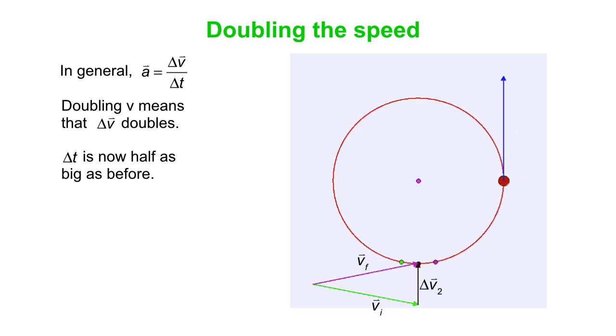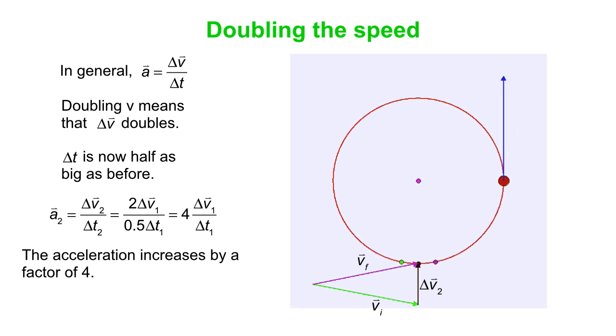And delta T is now half as big, because the object is going twice as fast, so to cover the same distance takes half the time. So the acceleration is now twice the original delta V over half of the original delta T. That's four times as big as what we had before. So the acceleration increases by a factor of four when we double the speed. In other words, the acceleration is proportional to V squared.